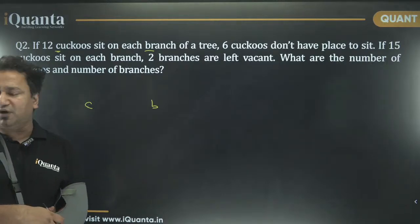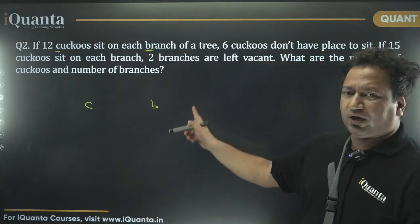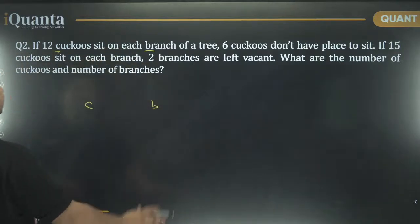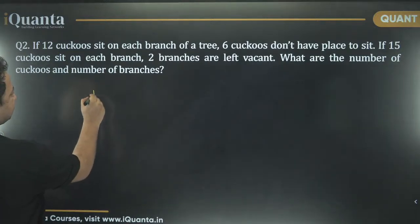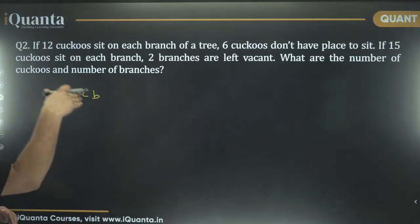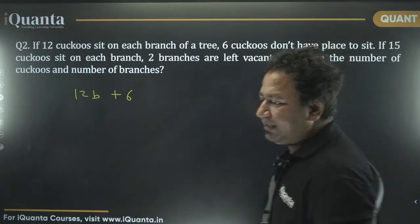The people who will be watching the recording, you can pause, solve it and then look at the solution. So, C cuckoos and B branches. 12 sit on each branch of a tree. Six cuckoos will not be having any place to sit. Iska matlab ye hai, ki if there are B branches and 12 sit on every branch, there will be 12B cuckoos sitting on the branches and six would not have any place to sit. Basically six will be the remainder. 12B plus 6, six will be the remainder.